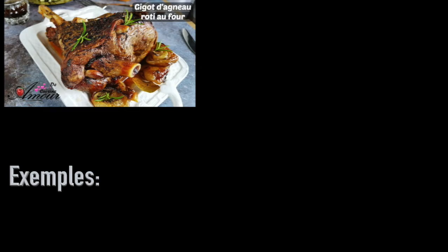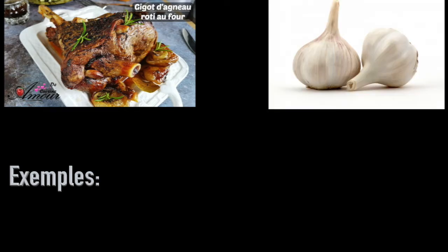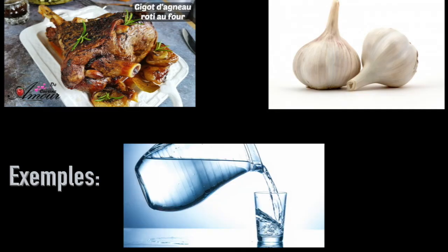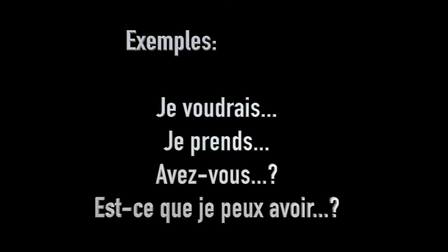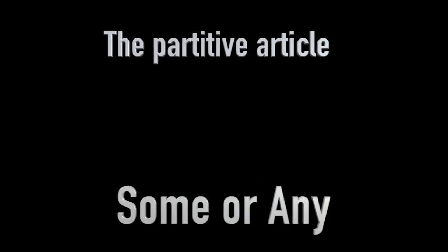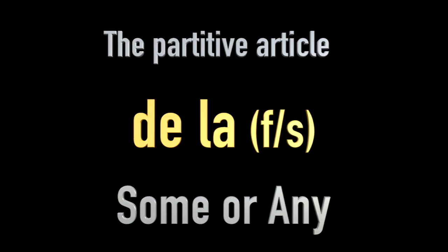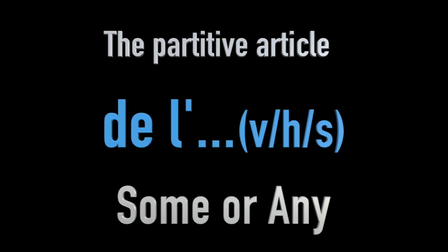Let's put some of those phrases together. I'll say them in French and see if you can translate them into English in the little pause — you can pause the video if you want. I'm going to use phrases like avez-vous (do you have?), est-ce que je peux avoir (can I have?), je voudrais (I would like), or je prends (I take) — combined with a partitive article beginning with D: du, de la, des, or de l'.